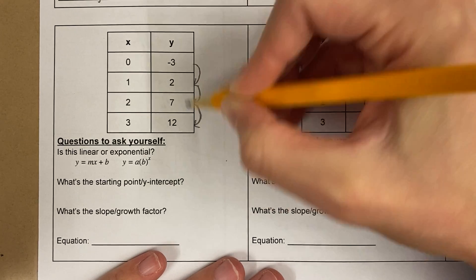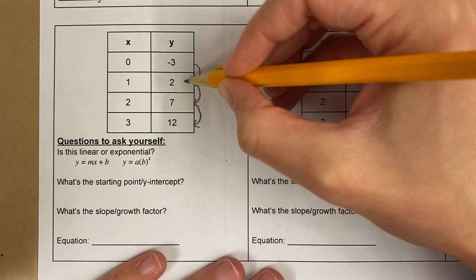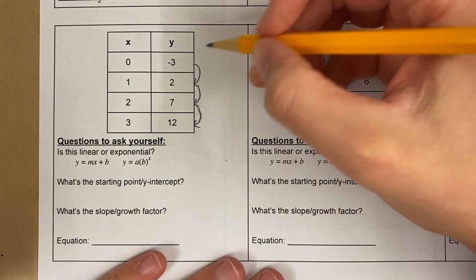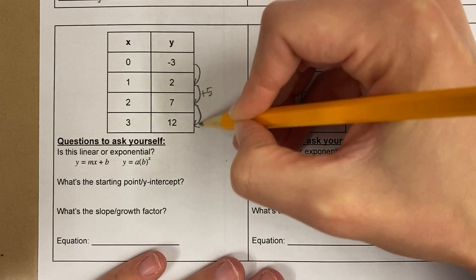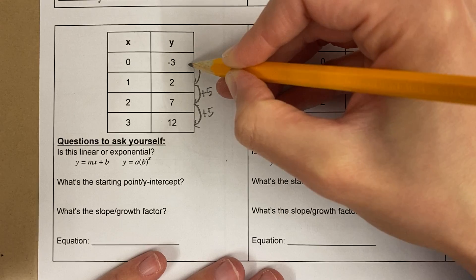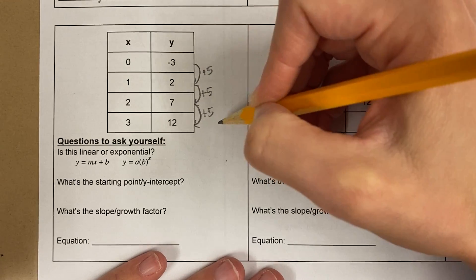So I'm gonna observe the pattern and what I notice, hmm, how do I get from 2 to 7? Oh well, I added 5. Oh, does that work from here? Does 7 plus 5 equal 12? Oh yeah, it is. Is negative 3 plus 5 equal to 2? Oh yeah. So I'm adding 5 all the way through.